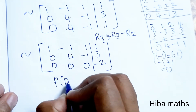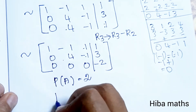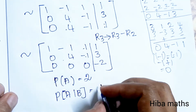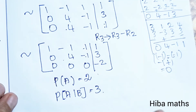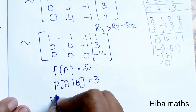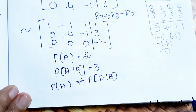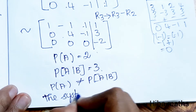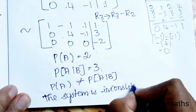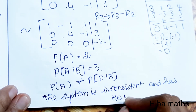Now the rank is different. The rank of A equals 2, since there are 2 non-zero rows in A. But the rank of the augmented matrix is 3, since the augmented matrix has a non-zero third row. Since rank of A is not equal to rank of the augmented matrix, the system is inconsistent and has no solutions.